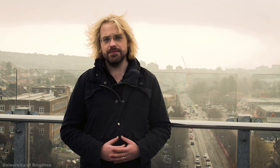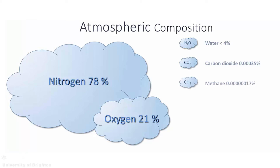The constituents of this 1% include water vapour, carbon dioxide, methane, carbon monoxide, ozone, sulphur dioxide and many more. Each of these gases makes up only a tiny fraction of the air, with the notable exception of water vapour, the abundance of which can vary significantly depending on where in the atmosphere you are.